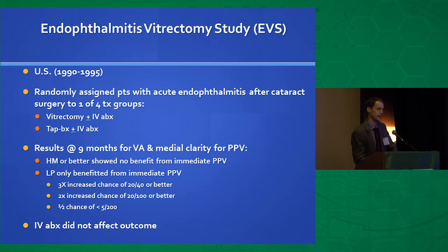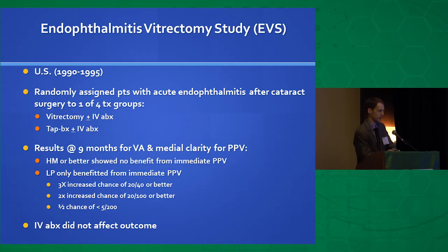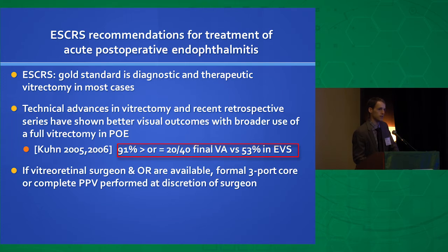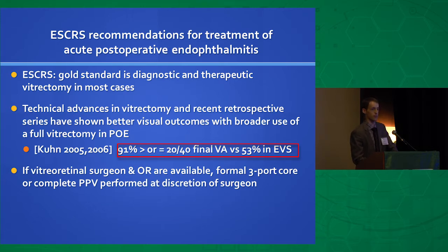The EVS study highlights: with hand motion or better vision, they did not find any difference between tap versus vitrectomy. But with light perception vision, there was a much better chance of regaining more vision with immediate vitrectomy. However, the ASCRS study and others have pointed out that early vitrectomy leads to better visual outcomes. One recent study showed 91% of patients got 20/40 or better final visual acuity, as opposed to only 53% in the EVS study, as a result of doing earlier vitrectomy.